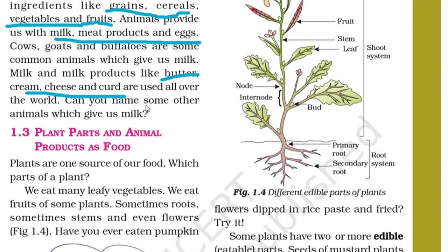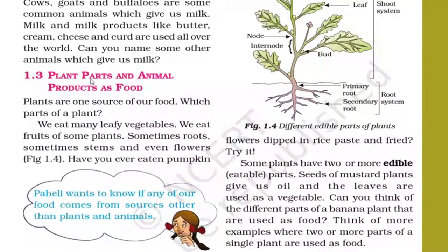Can you name some other animals which give us milk? Yes — camel, yak, donkey, reindeer, etc. are examples of some such animals which give us animal products as food.